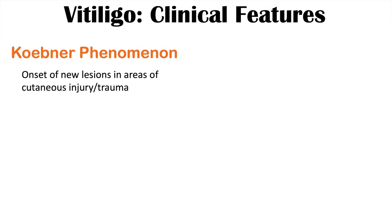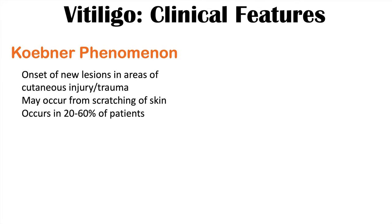One notable clinical feature is Koebner's phenomenon — the onset of new depigmented skin lesions in areas of cutaneous injury or trauma. This can occur from anything such as a bump or a scratch. Any type of injury may lead to new depigmented skin lesions in vitiligo, and this phenomenon can affect 20% to 60% of patients with vitiligo.